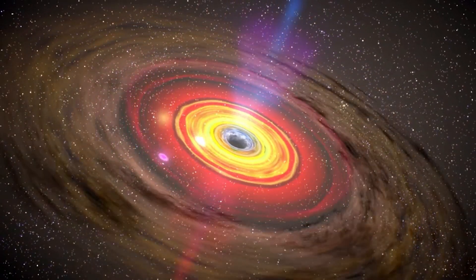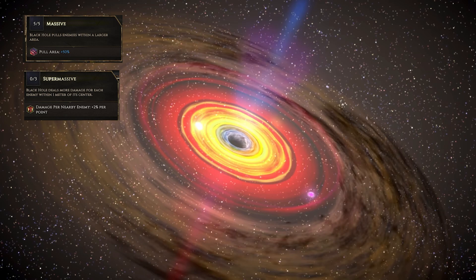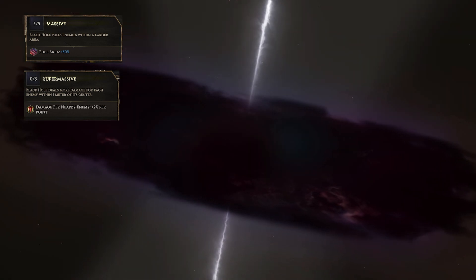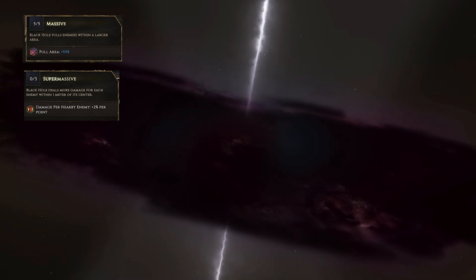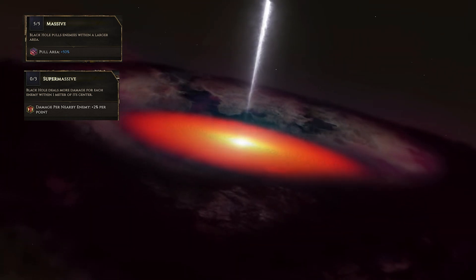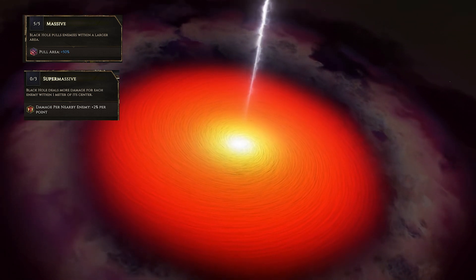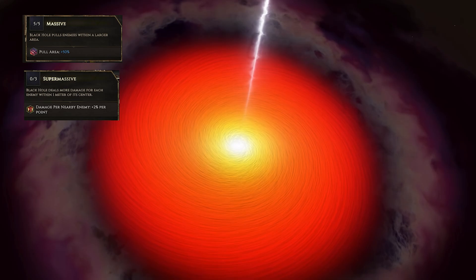Massive and supermassive, increasing pull area and damage per nearby enemy, are in fact categories of black holes. A supermassive black hole has swallowed multiple stars, planets and other objects and can usually be found at the center of galaxies, including our Milky Way.